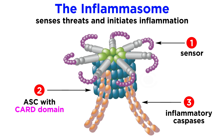The CARD domain can either be built directly into the sensor, or it can be found in the adapter protein ASC that many inflammasomes use. The CARD domain is essential for the inflammatory caspases to bind to the inflammasome complex.